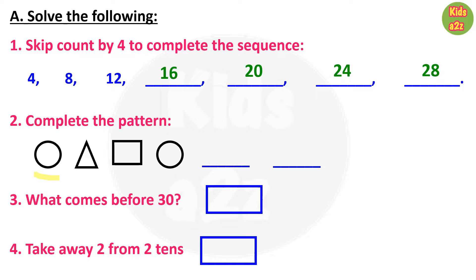After that a triangle, then a rectangle, then again a circle. So after circle kids need to draw a triangle and then a rectangle. Question number 3: what comes before 30? Answer is 29.